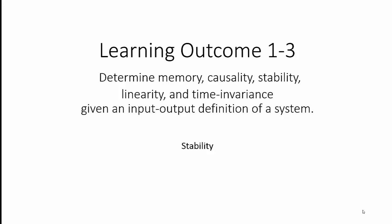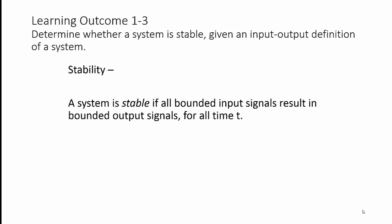Learning Outcome 1-3: Determine memory, causality, stability, linearity, and time invariance given an input-output definition of a system. This video covers the system property stability. When considering an input-output definition of a system, stability is defined as: a system is stable if all bounded input signals result in bounded output signals for all time t.